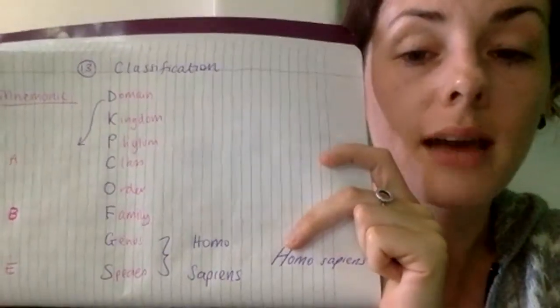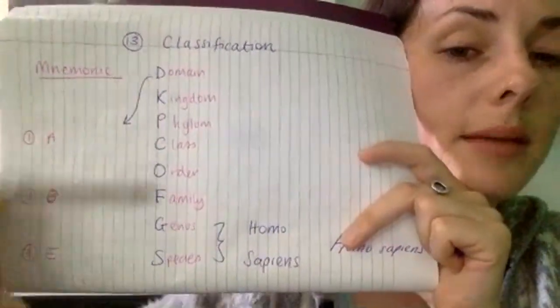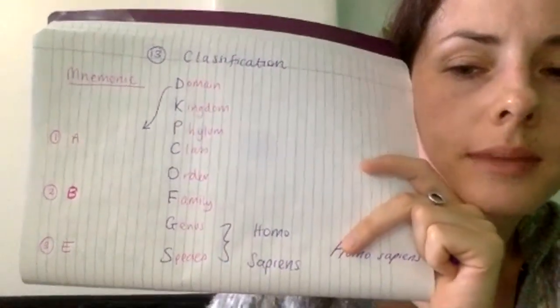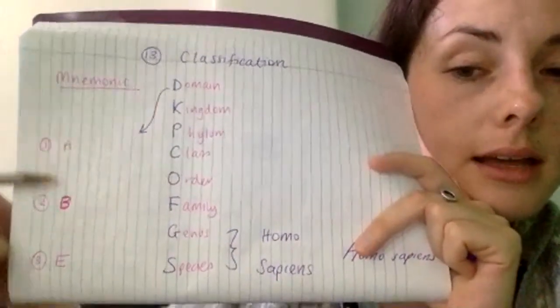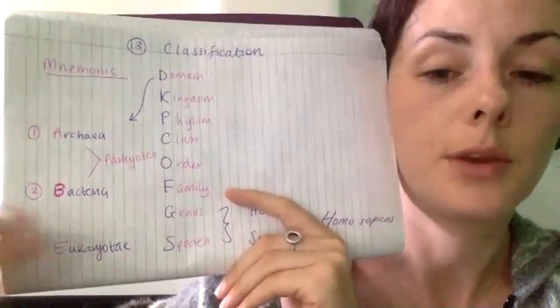The three domains are archaea, bacteria, and eukaryota. Prokaryotes fit into both archaea and bacteria — certain species of prokaryotes fall under both. Eukaryotes are your animal cells, fungi, plant cells, etc. You could be asked to name all three, or given two and asked to fill in the third.